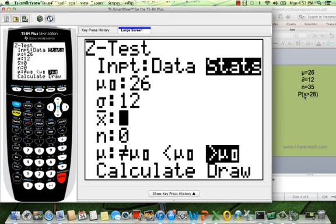The x bar is going to be 28 because remember, that is what we're looking for. The probability is going to be more than 28 messages. And it's going to be equals to 35. And I'm almost done.